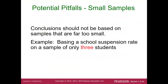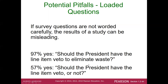Conclusions should not be based on samples that are far too small. For example, if you look at three students — one with zero days suspension, one with five days, and one with 180 days — averaging those three gives a number that doesn't represent the behavior of the population. A sample of three students really won't cut it in terms of reflecting the behavior of the corresponding population.